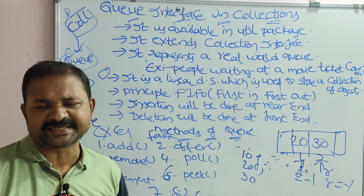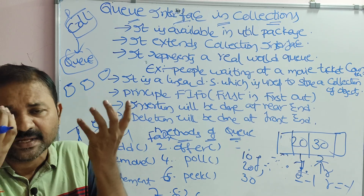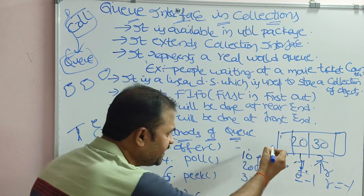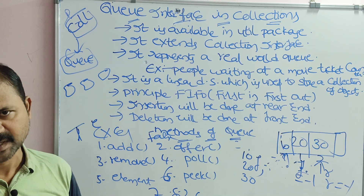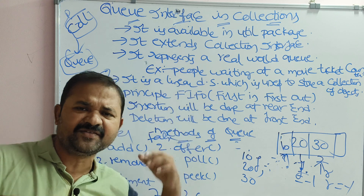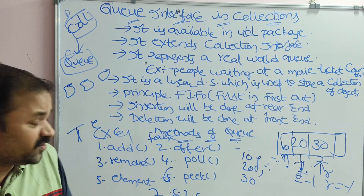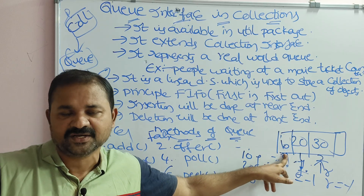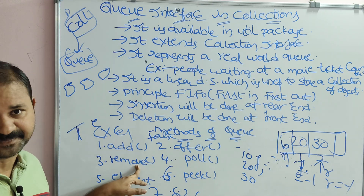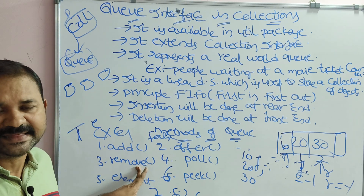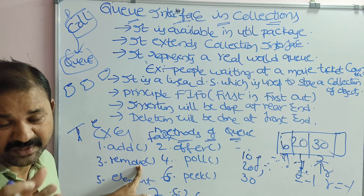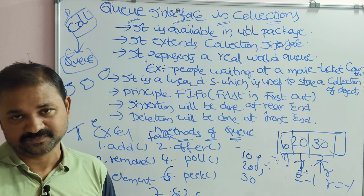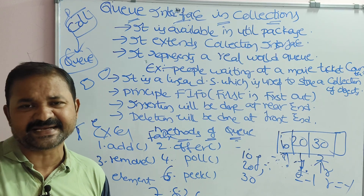The remove and poll methods are both used to remove the head (topmost element) of the queue and return it. If the deletion is successful, both return the deleted element. If the deletion fails — that is, when the queue is empty — remove returns an exception, whereas poll returns null, indicating the queue is empty.